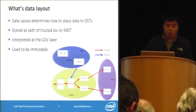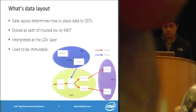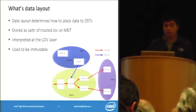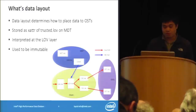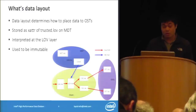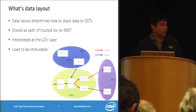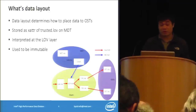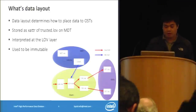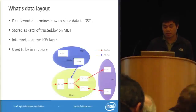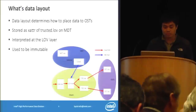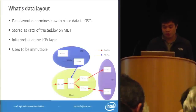So what is the data layout in Lustre? Data layout determines how to place your data onto OSTs. In Lustre, we usually put data on multiple OSTs to fully use the network and disk drive bandwidth. It's important for you to know the data location so that you can find it back later. Right now, the layout is stored as an extended attribute on the MDT object and interpreted by the LOV layer.